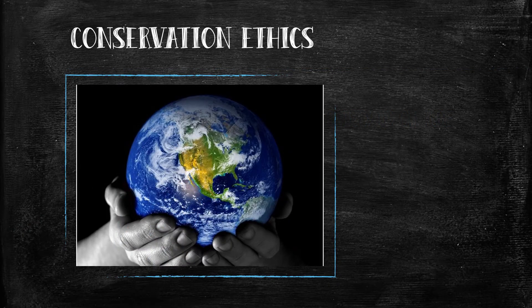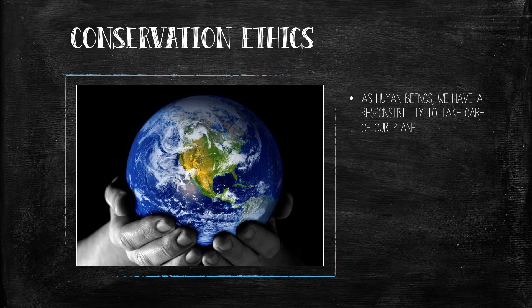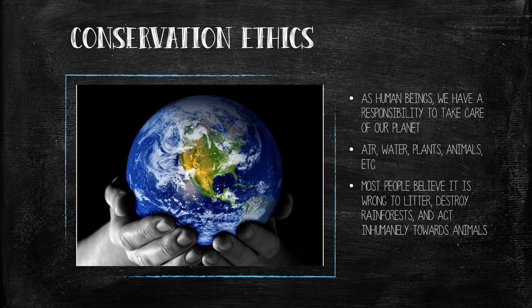Finally, a system of moral principles can also belong to the entire world. For example, most people can agree that as human beings we have a responsibility to take care of our planet. This includes everything from the Earth's air and water to its plants and animals. In general, most people believe it is wrong to litter, destroy rainforests, and act inhumanely towards animals. This set of morals is known as conservation ethics.